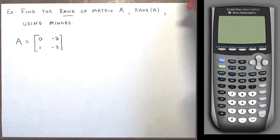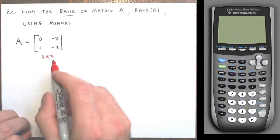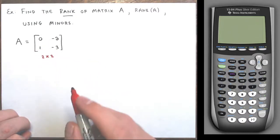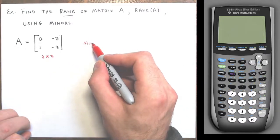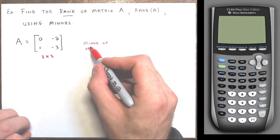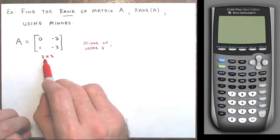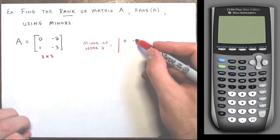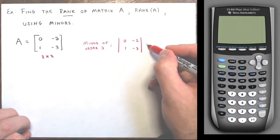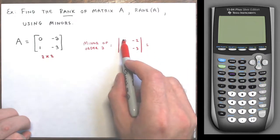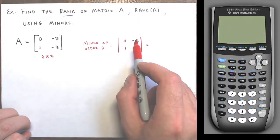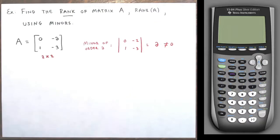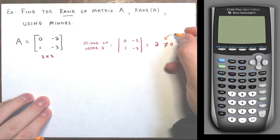So look at this matrix A — this is already a square matrix, it's two by two. So the matrix itself is a submatrix. There's a minor of order two here, where I don't remove any rows or columns, and I get the square matrix. It's the determinant of the two by two matrix: zero, negative two, one, negative three.